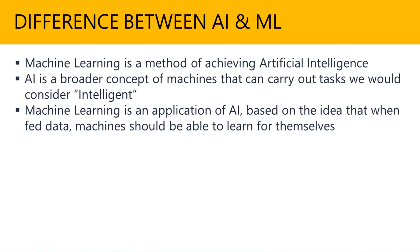Machine learning is a method of achieving artificial intelligence. Think of AI as being on the top or the outer circle, and in the inner circle you have machine learning. Artificial intelligence is a broader concept of machines that can carry out tasks we would consider intelligent — maybe redundant tasks you wish to automate. Within AI is machine learning, which is the application of AI itself, based on the idea that when you feed data, the machine should be able to learn for itself. The key word here is data, which means big data.